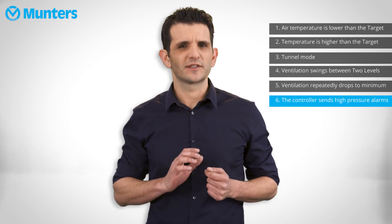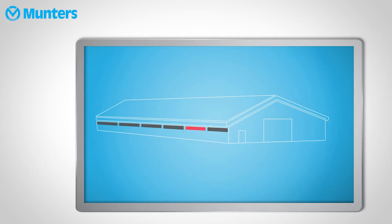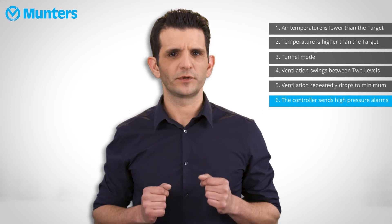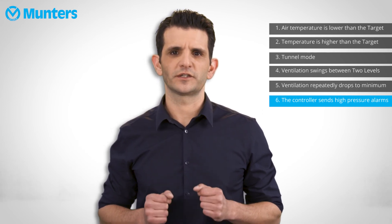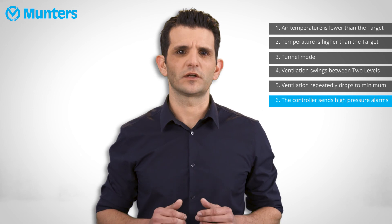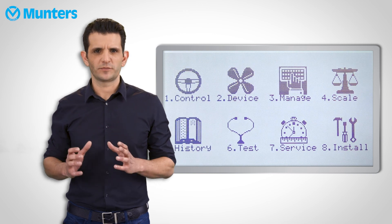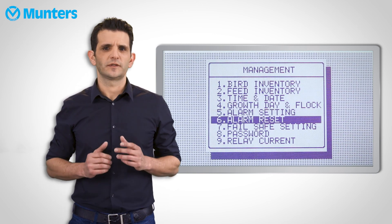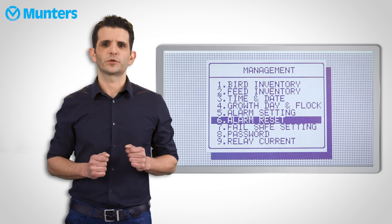Usually when there is an alarm — high temperature for example — the alarm will stop once the temperature lowers back to normal values. This is not the case with high pressure, which usually indicates an ongoing problem in the house, such as an inlet that would not open or a fan that does not stop. This high pressure occurrence will appear over and over again when reaching a certain ventilation level. In order to make sure that this problem is noticed by the grower, the controller will not stop this alarm until it is manually reset. To reset the alarm, go to Management menu, then Alarm Reset, and simply reset the alarm.